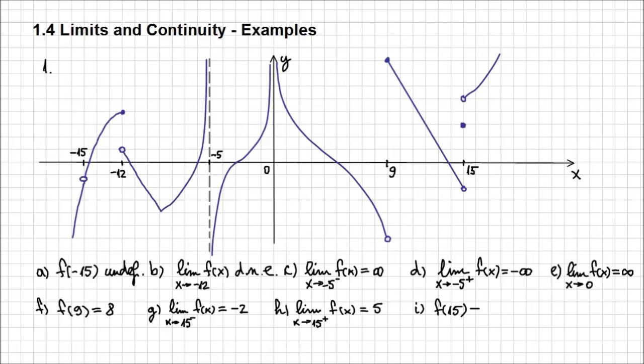And the last thing that we need to determine, just to make it clear, f of 15 is going to be, well, it's that filled point, which is of coordinates 15 and 3. So f of 15 is going to be 3. So you see, it's actually very simple.